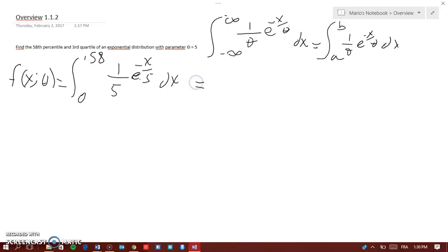And that would equal to negative e to the negative x over 5 from 0 to 0.58, which would equal to 1 minus e to the negative x over, or basically over theta.